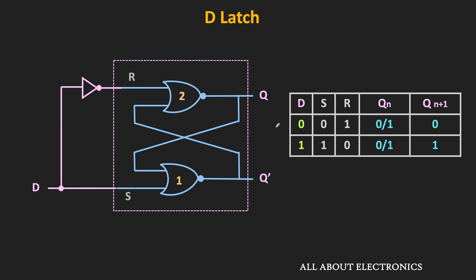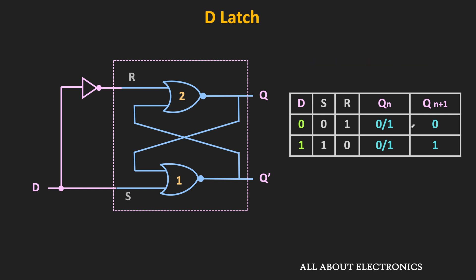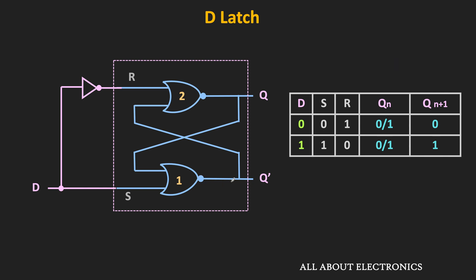When the D input is equal to 0, then S is 0 and R is 1. Since R is 1 and S is 0, the output of the flip-flop will become 0. Likewise, when D is equal to 1, then S is 1 and R is 0, and therefore the output of the flip-flop will become 1. This is the basic circuit of the D latch.